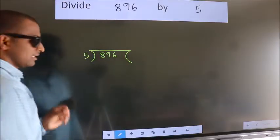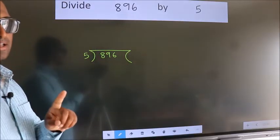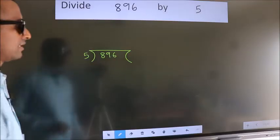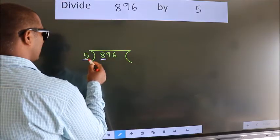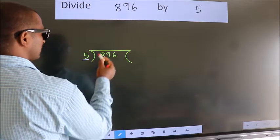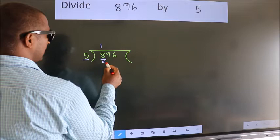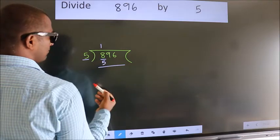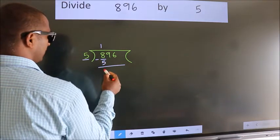This is your step 1. Next, here we have 8, here 5. A number close to 8 in the 5 table is 5 once 5. Now, we should subtract. We get 3.